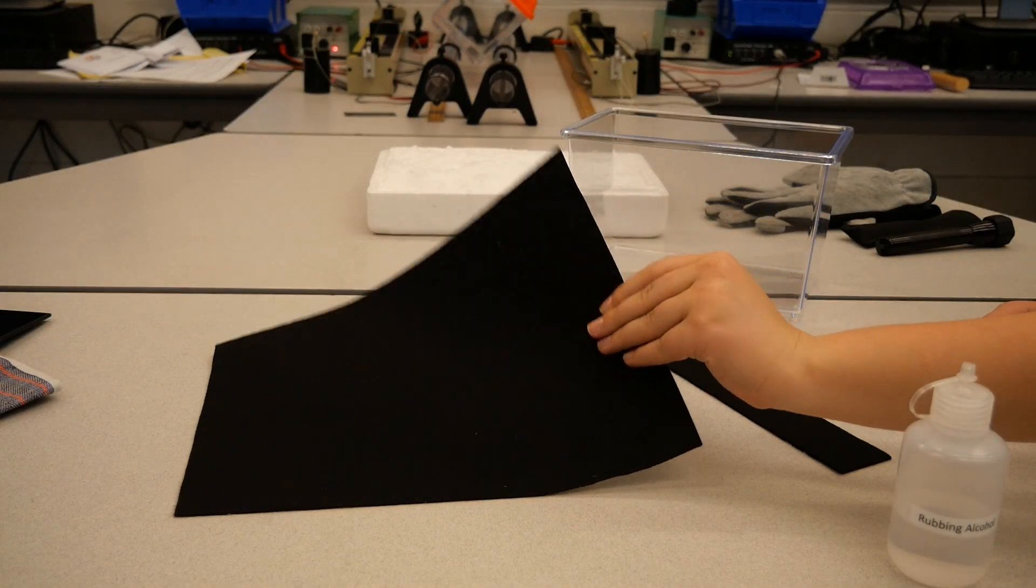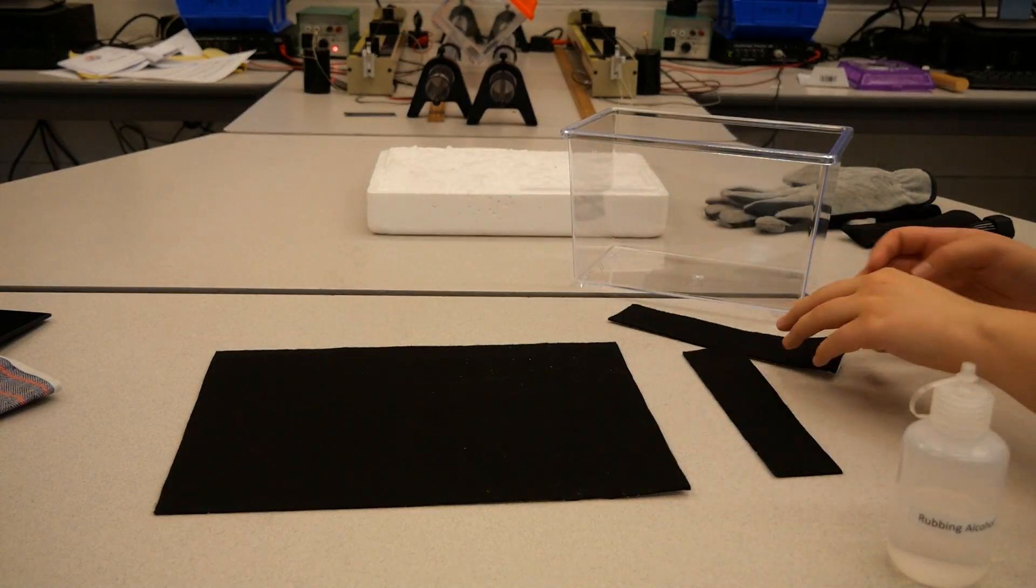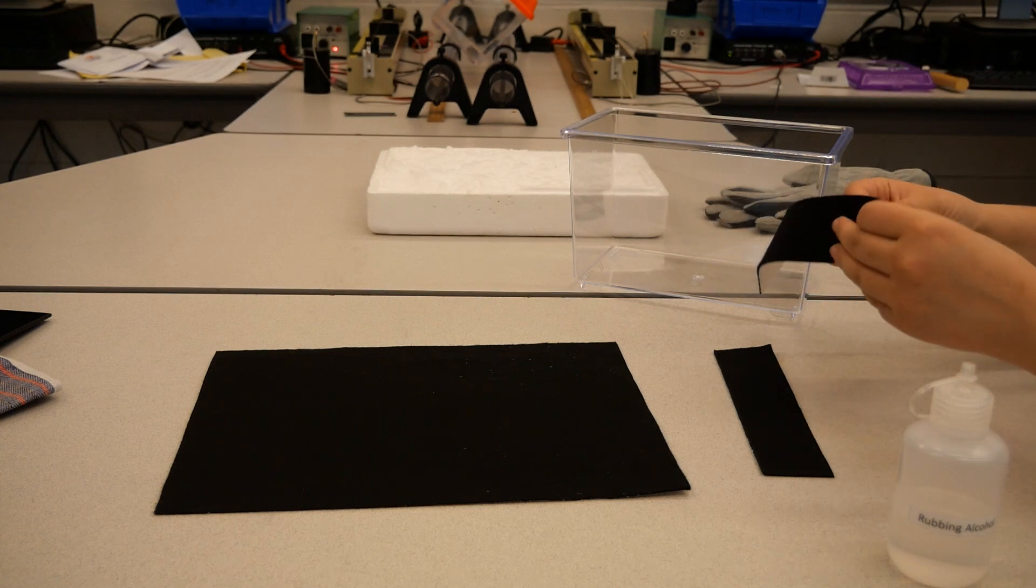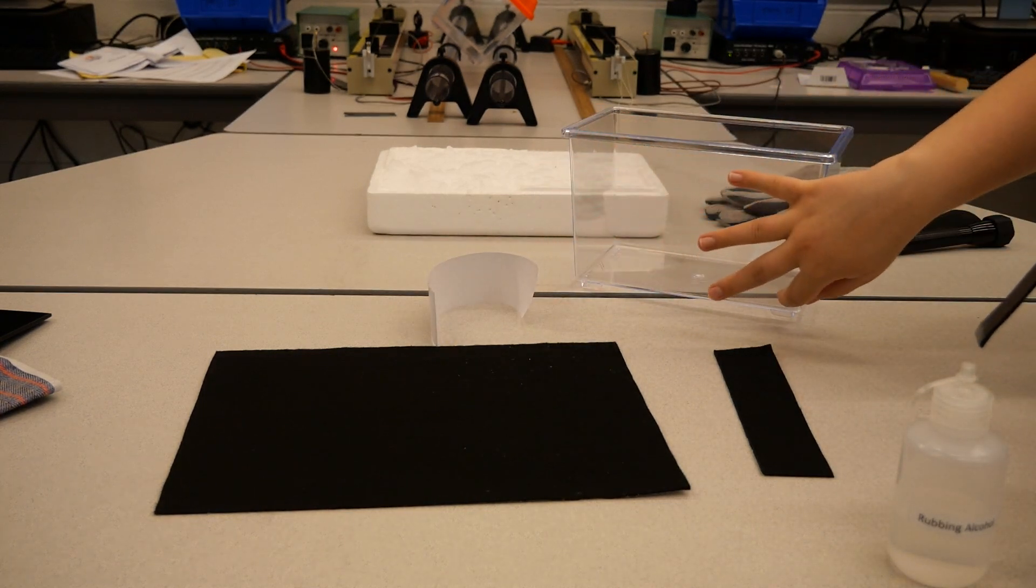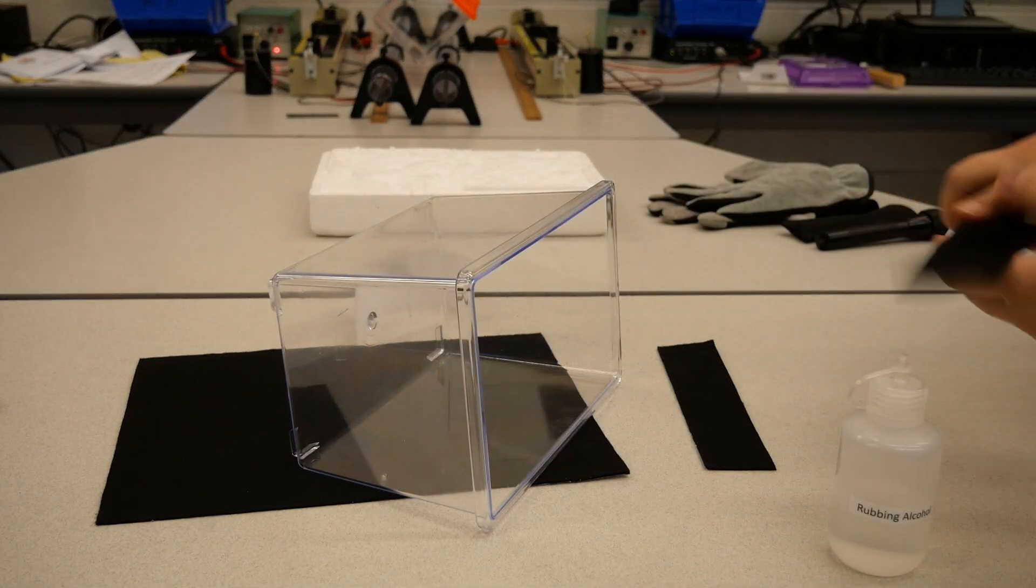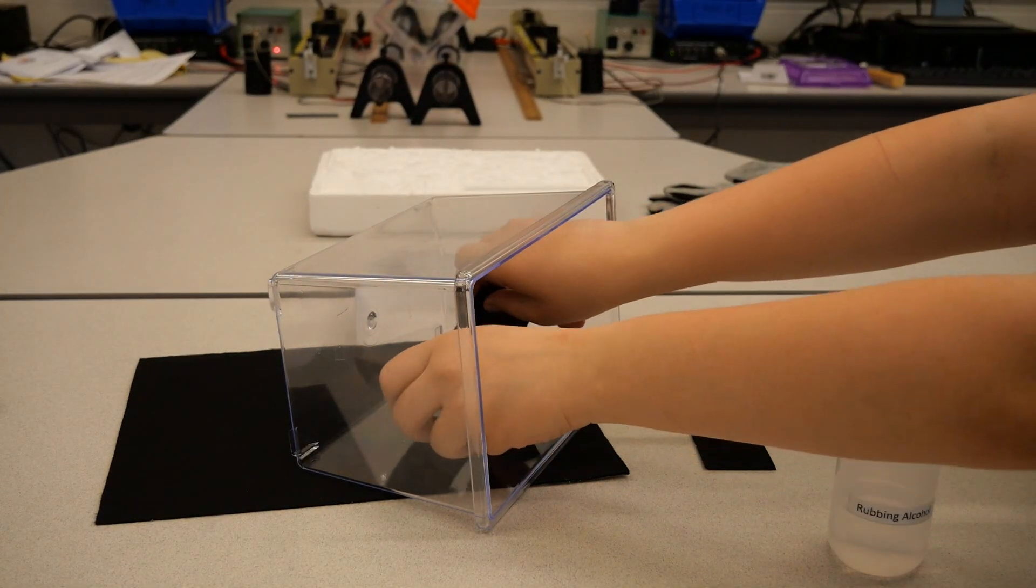First, you're going to take your felt sheet and cut it into two strips. Ours are about 1 and 3 quarter inches wide. You want them long enough to align with the sides of the bottom of your box. Once you have them properly cut, go ahead and stick them on the inside of your plastic box.